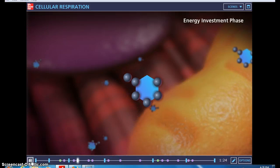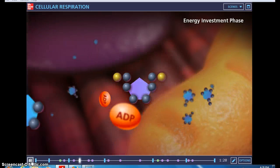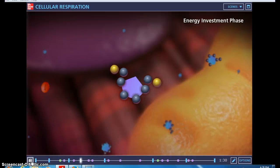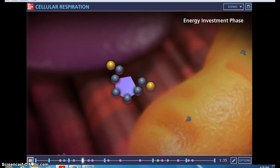In the energy investment phase, two ATP molecules transfer energy to the glucose molecule, forming a six-carbon sugar diphosphate molecule. This molecule splits, and the energy harvesting phase begins.